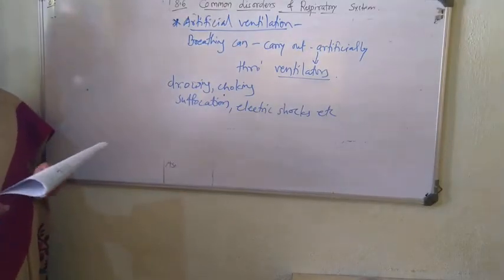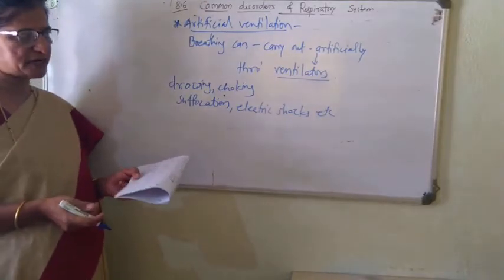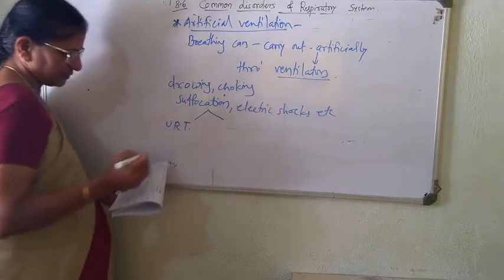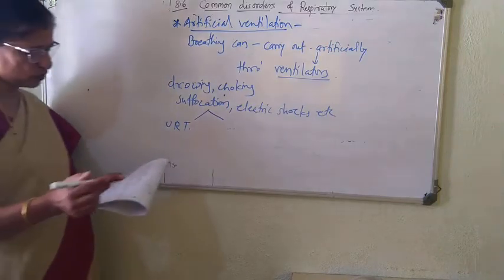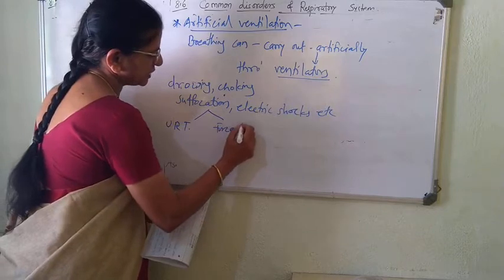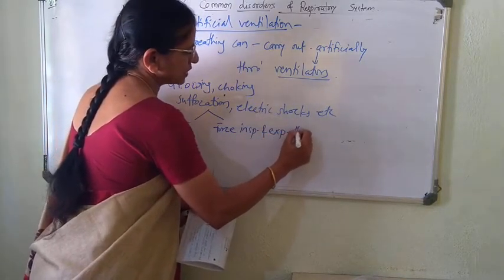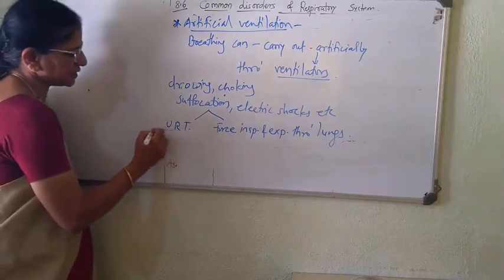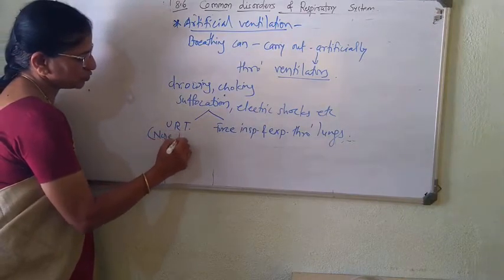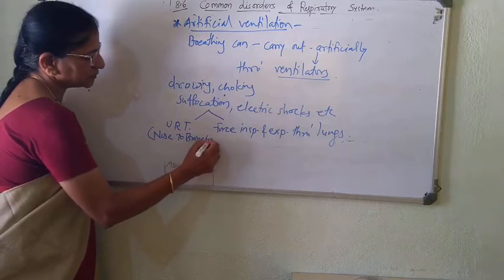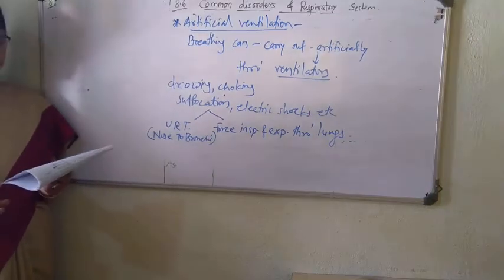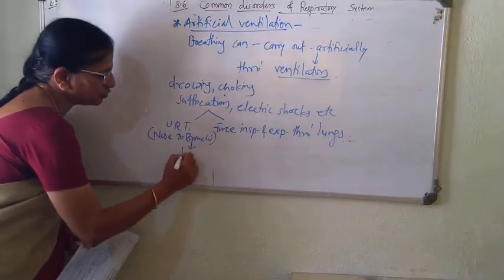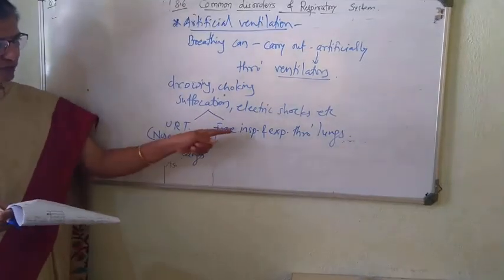There are two ways artificial ventilation works: first, establish and maintain an open air passage from the upper respiratory tract — from nose to trachea or bronchi — up to the lungs. Second, force inspiration and expiration through the lungs.